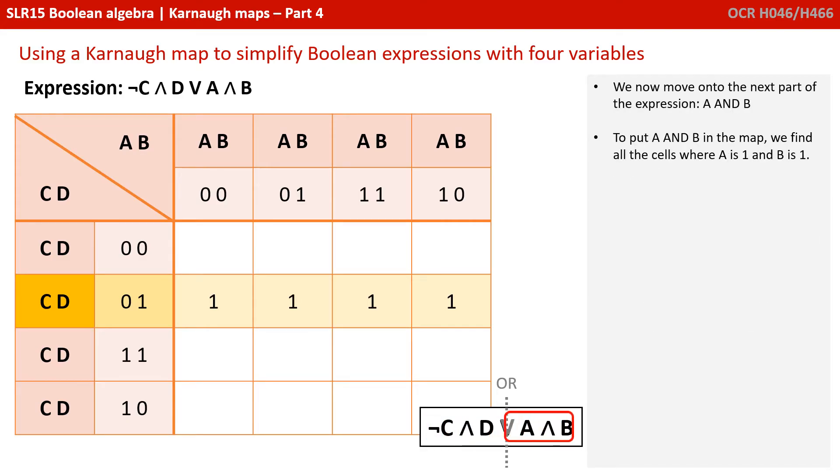We now move on to the next part of the expression A and B. And to put A and B in the map, we find all the cells where A is one and B is one. There are four cells where this is the case, so we put one in each of these.